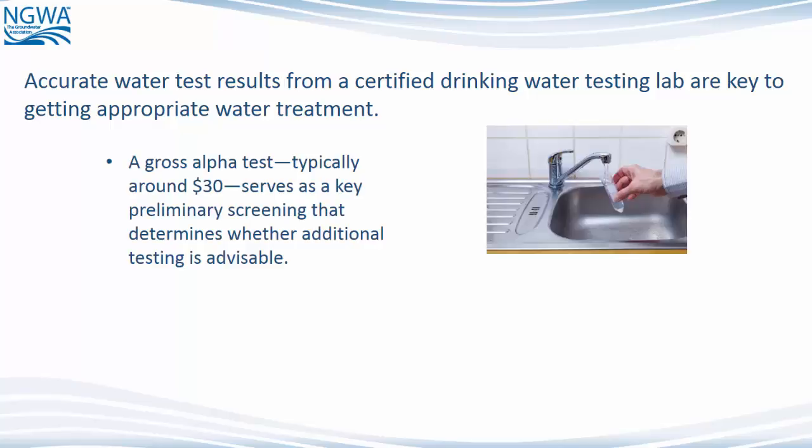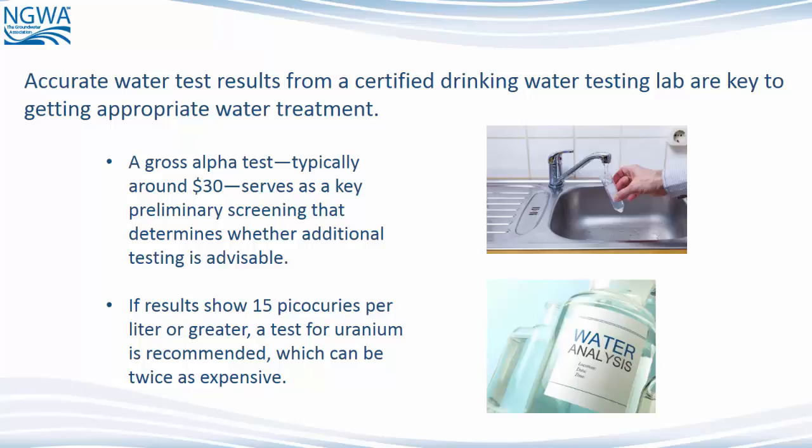A gross alpha test, typically around $30, serves as a key preliminary screening that determines whether additional testing is advisable. If results show 15 picocuries per liter or greater, the test for uranium is recommended, which can be twice as expensive.